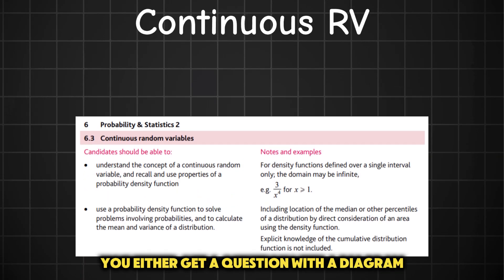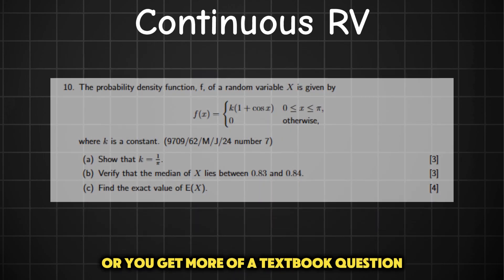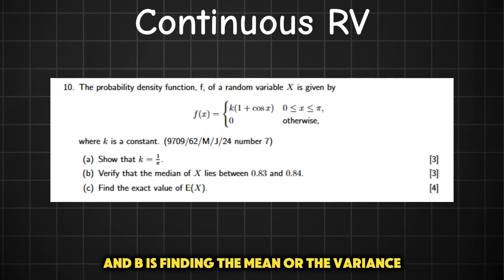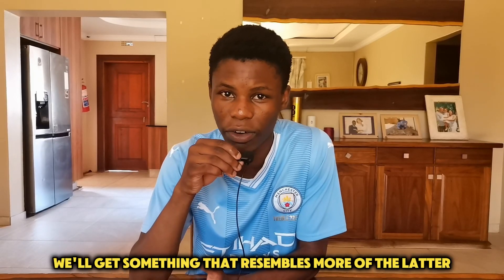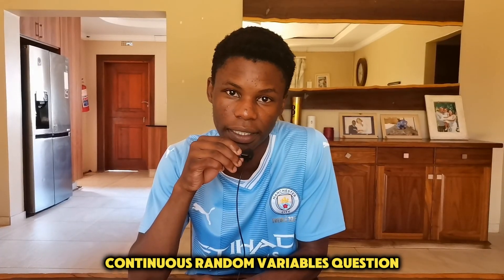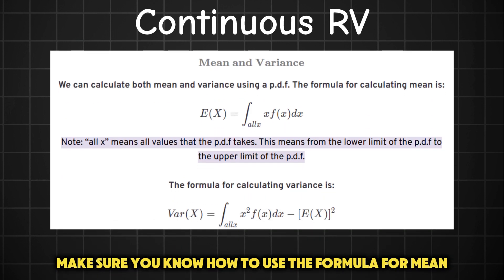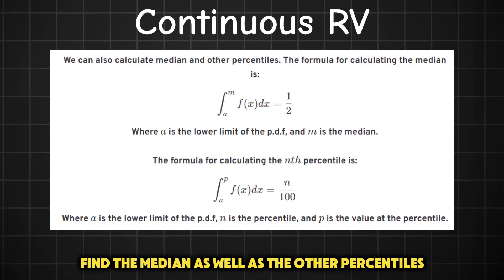For continuous random variables you either get a question with a diagram where you evaluate some probability with letters, or a more textbook-style question where part a is showing that k equals some value, b is finding the mean or variance, and c is the median or some other percentile. I get the feeling that in this February paper we'll get the textbook continuous random variables question. So make sure you know the properties of a PDF, how to apply the formula for mean and variance, and how to find the median and other percentiles.